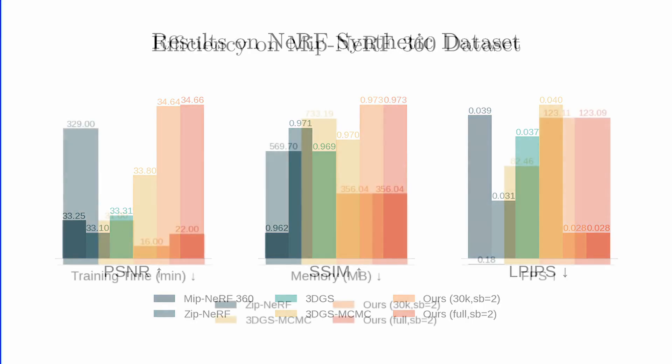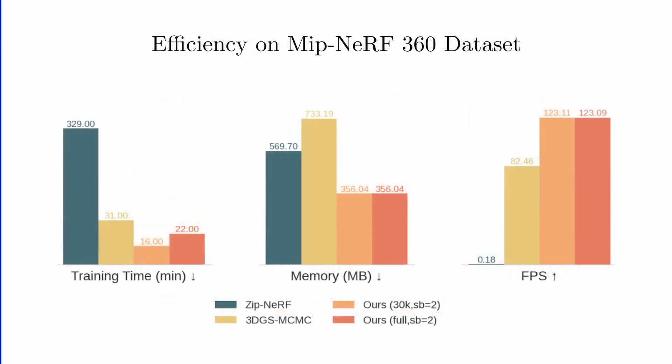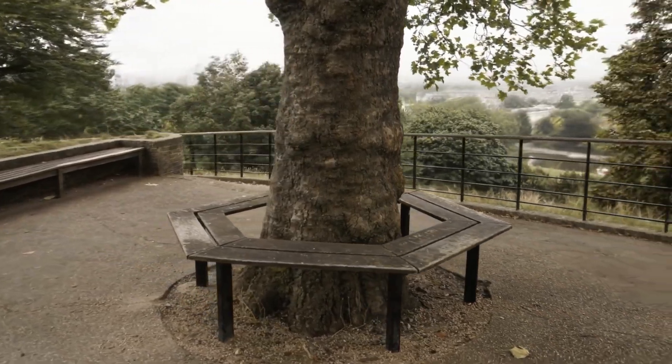Notably, DBS accomplishes this with less than half the memory and training time, and renders one-and-a-half times faster compared to Gaussian-based methods.